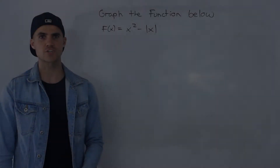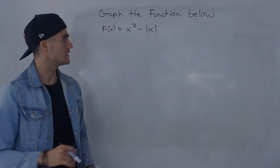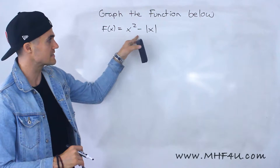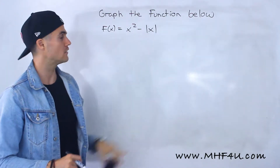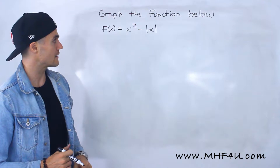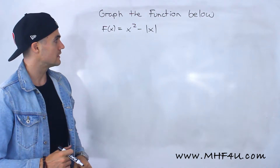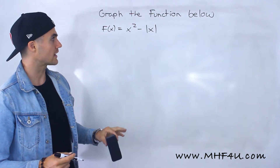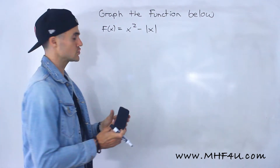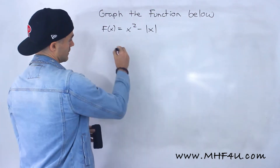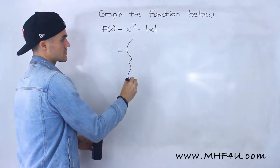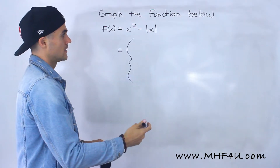What's up everyone, welcome back. In this video, what we're going to do is take the function x squared minus the absolute value of x and graph it. This one's a little more complex — what I'm going to do is actually take this function and change it to a piecewise function first, and then graph it.